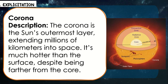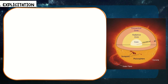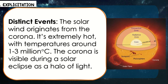The corona is the sun's outermost layer extending millions of kilometers into space. It's much hotter than the surface, despite being farther from the core. The solar wind originates from the corona. It's extremely hot, with temperatures around 1 to 3 million degrees Celsius. The corona is visible during a solar eclipse as a halo of light.